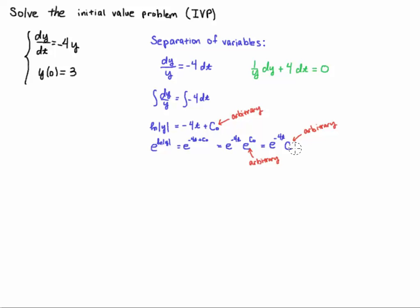I can write any positive number as e to something. So I go on to the next step and I have the absolute value because the exponential of a natural log is an absolute value and is equal to c e to the minus 4t.